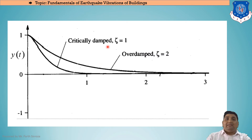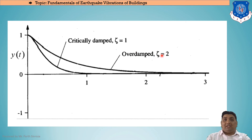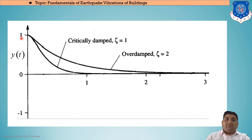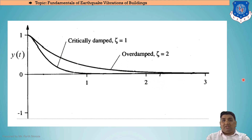In comparative analysis: for an overdamped system, ζ > 1; for a critically damped system, ζ = 1. Looking at the graph of ζ versus displacement y(t): an initial displacement is provided; after the force is released, the system returns to equilibrium. If it reaches equilibrium at ζ = 1, it is critically damped; if it requires ζ values greater than 1 (e.g., 2, 3, or more), it is overdamped.